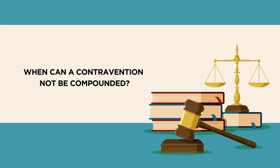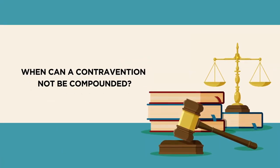When can a contravention not be compounded? In case where a person commits a contravention within three years of the date when such contravention was previously compounded under the compounding rules, then it shall not be compounded. However, a contravention committed after the end of a three-year term from the date on which the contravention was previously compounded is deemed as the first contravention.